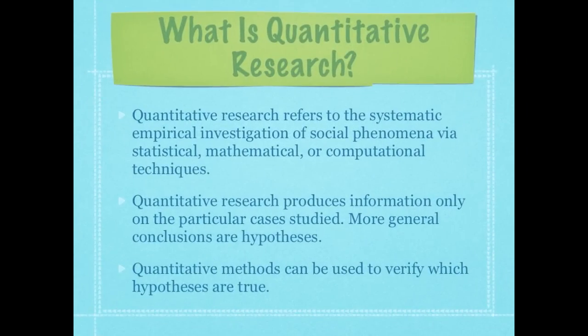Quantitative research refers to the systematic empirical investigation of social phenomena via statistical, mathematical, or computational techniques. You should recognize that definition — it's right out of Wikipedia. Empirical is about numbers. When you think quantitative research, think number research, quantifying things with numbers.